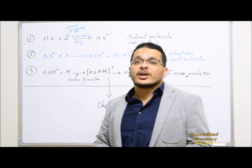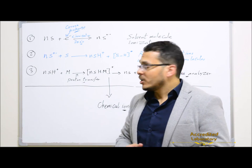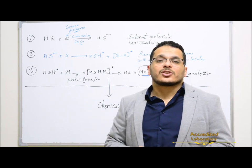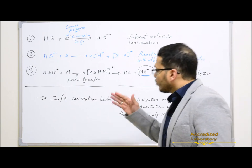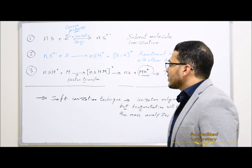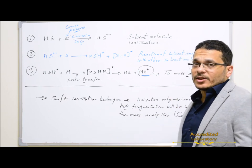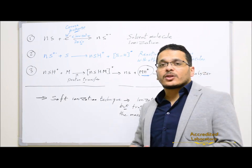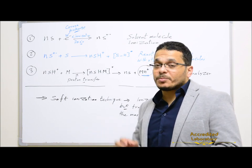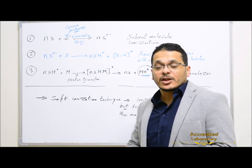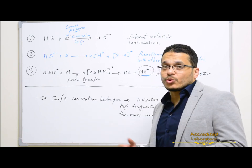If you want to refresh your information, you can go back to the chemical ionization lecture to see the four reactions related to chemical ionization. As you know from electrospray ionization, atmospheric pressure chemical ionization is also a soft ionization technique where ionization only happens in the ion source to produce ions transferred to the mass analyzer. These ions will then be fragmented in the mass analyzer by a collision cell or Q2 quadrupole, not in the ion source.